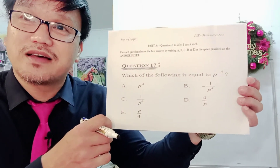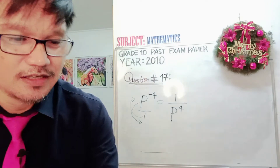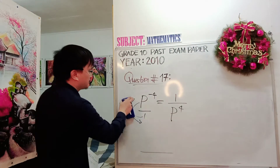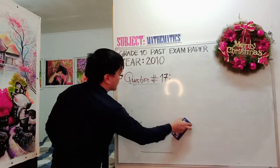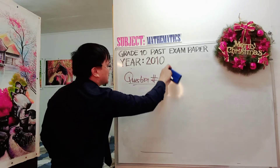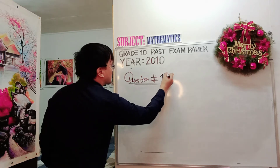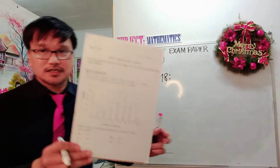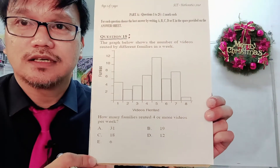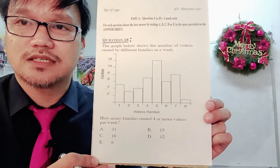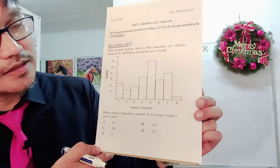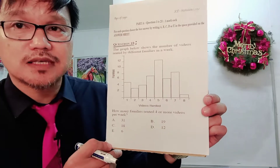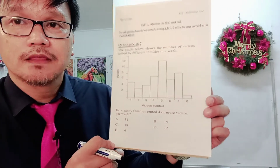Let's now proceed to question number 18. Question number 18 is on the topic statistics. This is statistics, and it is reading the graph. This graph is a histogram.